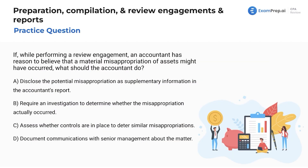If while performing a review engagement an accountant has reason to believe that material misappropriation of assets might have occurred, what should we do? We believe there are problems going on. Option A: do we disclose it as supplementary information in the report? We're not going to do that. We are going to address it and talk about it, but you don't want to just publish the problem right away.